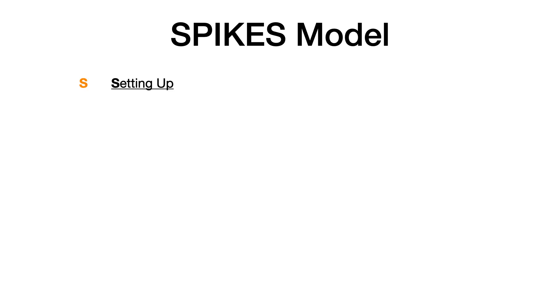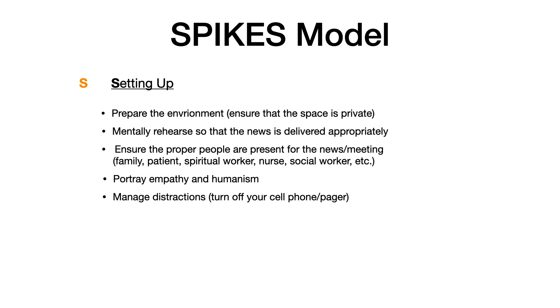We're going to go through this model one element at a time. This is very high yield. The first part of the SPIKES model is S, setting up. In this phase of breaking bad news, you want to prepare the environment. If you're going to break bad news, you need to ensure that the space is a private space. You also want to mentally rehearse what you're about to say, so that when you deliver the news, you're delivering it both appropriately and effectively.